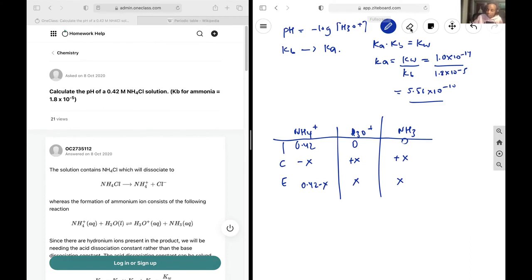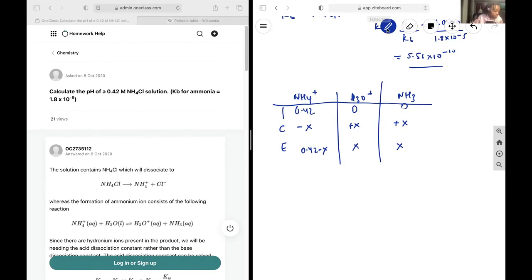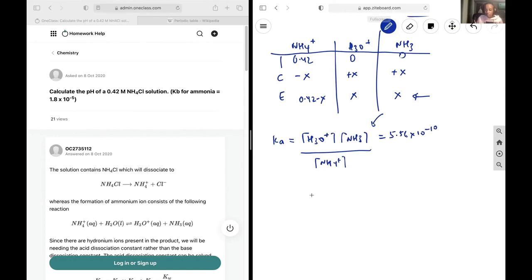And so since, because of the fact that Ka can also be written as this. So it's the rate constant for this acid-base reaction. And we know what Ka is. It's 5.56 times 10 to the negative 10. We simply plug in these values at equilibrium into this and solve for x. Okay, so H3O is going to be x by x over 0.42 minus x. And that's going to be x squared over 0.42 minus x is equal to 5.56 times 10 to the negative 10.